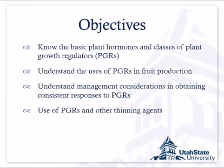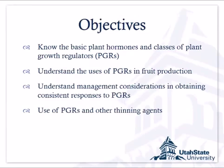The objectives are to talk about what are plant hormones and what are plant growth regulators, which ones are used in fruit production, and then understanding some of the management considerations. If you're going to use a plant growth regulator or a plant hormone, what are some of the snags you're going to run into and what are some of the things you can do to avoid those complications. And then talk a little bit about plant growth regulators for fruit thinning, primarily for apples, and how those are used and some of the complications as well.